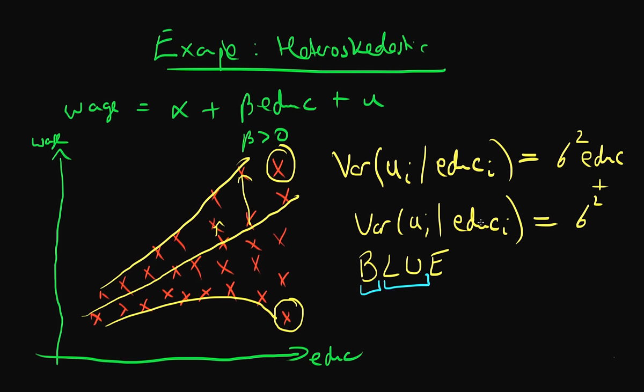Note that because of this heteroscedasticity, we don't necessarily have bias in our estimate of the effect of education on wages, because our line still in general goes through the center of the points here. Written mathematically...